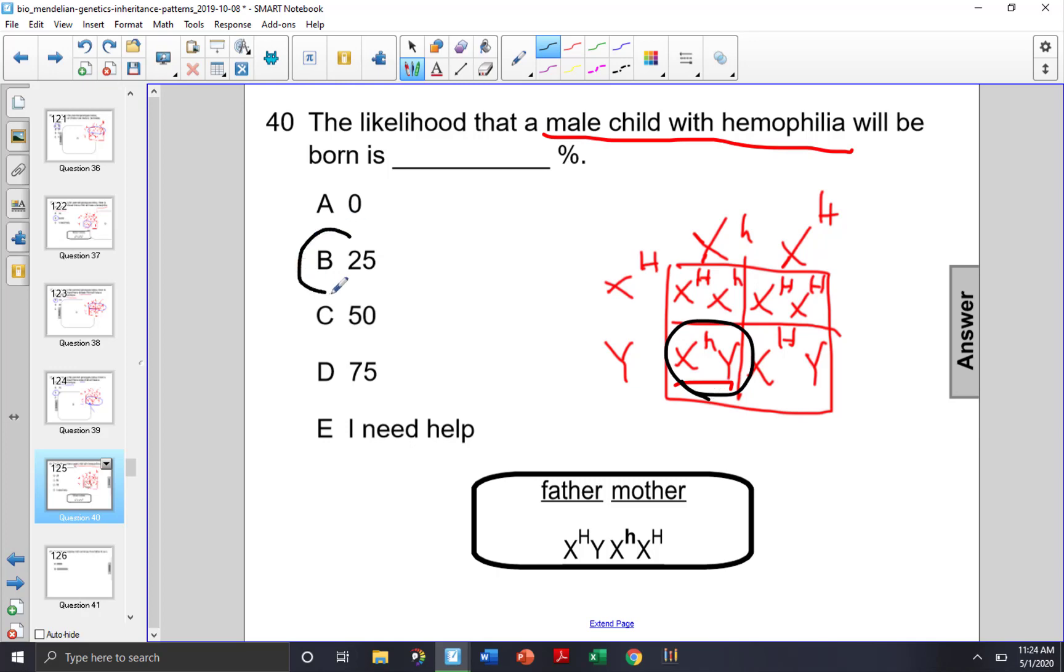It is a 25% chance that one of the offspring will carry that little h allele and be a male child with hemophilia.